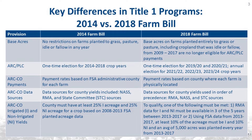Under the 2014 Farm Bill, producers made a one-time ARC or PLC election by crop and by farm that remained in effect for the 2014 to 2018 crop years for commodities other than seed cotton. For seed cotton, producers made an ARC PLC election effective for the 2018 crop year. The ARC PLC provisions in the 2018 Farm Bill allow producers to make an ARC PLC election by crop and by farm for the 2019-20 and 2021 crop years. Starting with the 2020-22 crop year, producers will make an annual ARC PLC election.